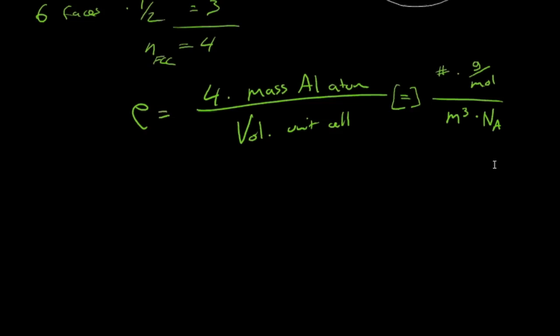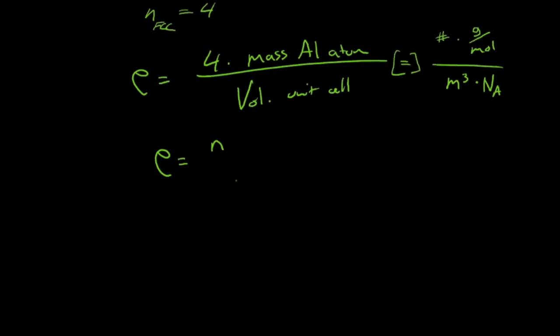So we'll divide by Avogadro's number. And so we can actually just take this now, now that we've done our little dimensional analysis, we've realized we need to add an Avogadro's number. And we can generalize and say that the theoretical density for a metal is going to be equal to the number of atoms in the unit cell times the atomic weight, or the molar mass, divided by the volume of the unit cell times Avogadro's number.